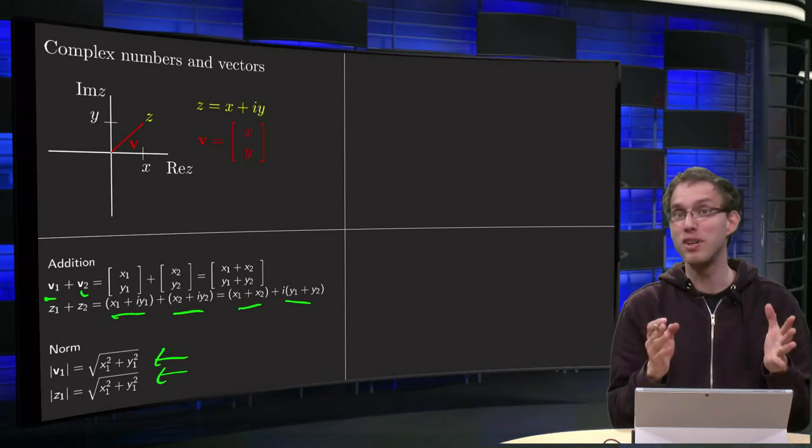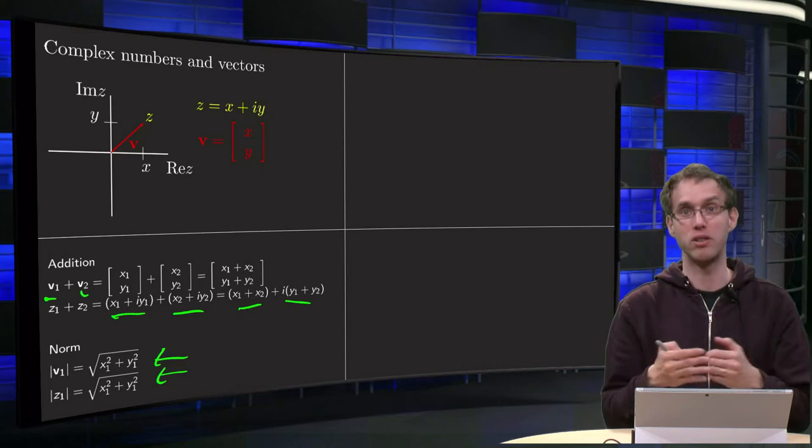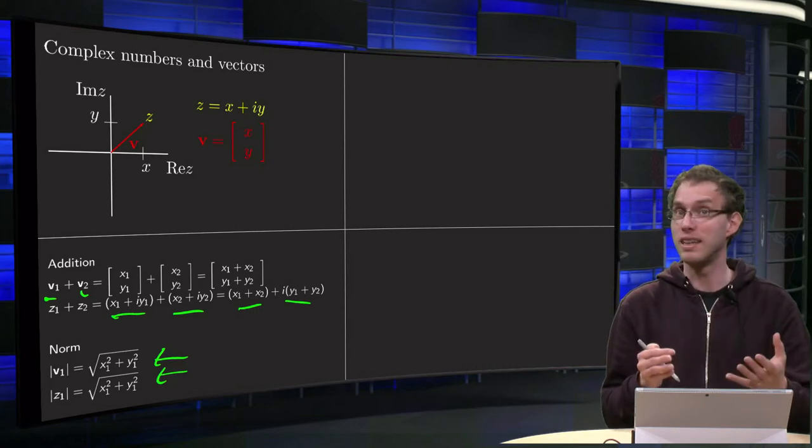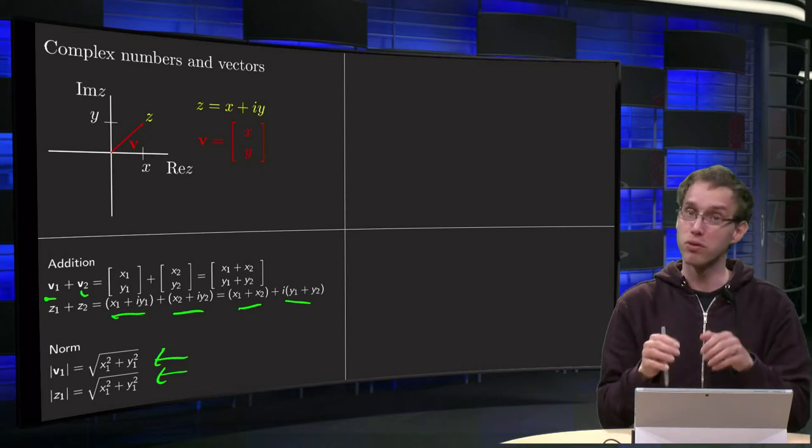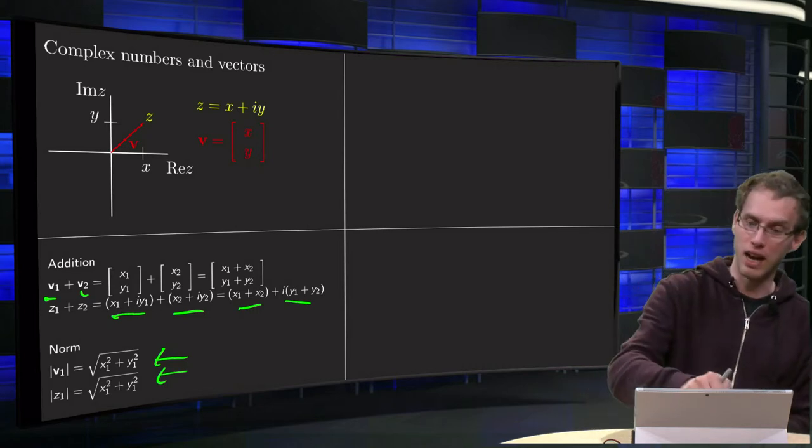So what's different then between them? Well, for example, if you take the product of two vectors, you typically take the dot product, and that's something different than taking the product of two complex numbers. So there they are not the same anymore.